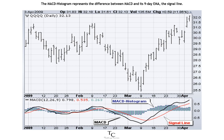The MACD histogram represents the difference between MACD and its 9-day EMA, the signal line. The MACD histogram is positive when MACD is above its 9-day EMA and negative when MACD is below its 9-day EMA.